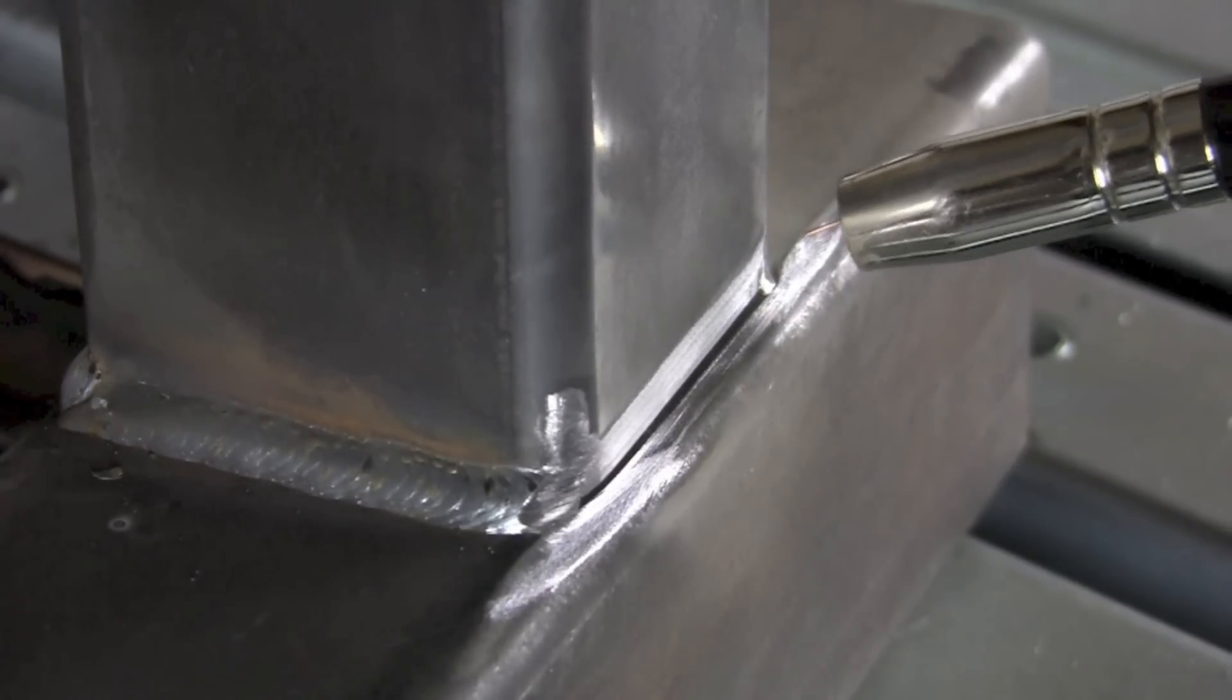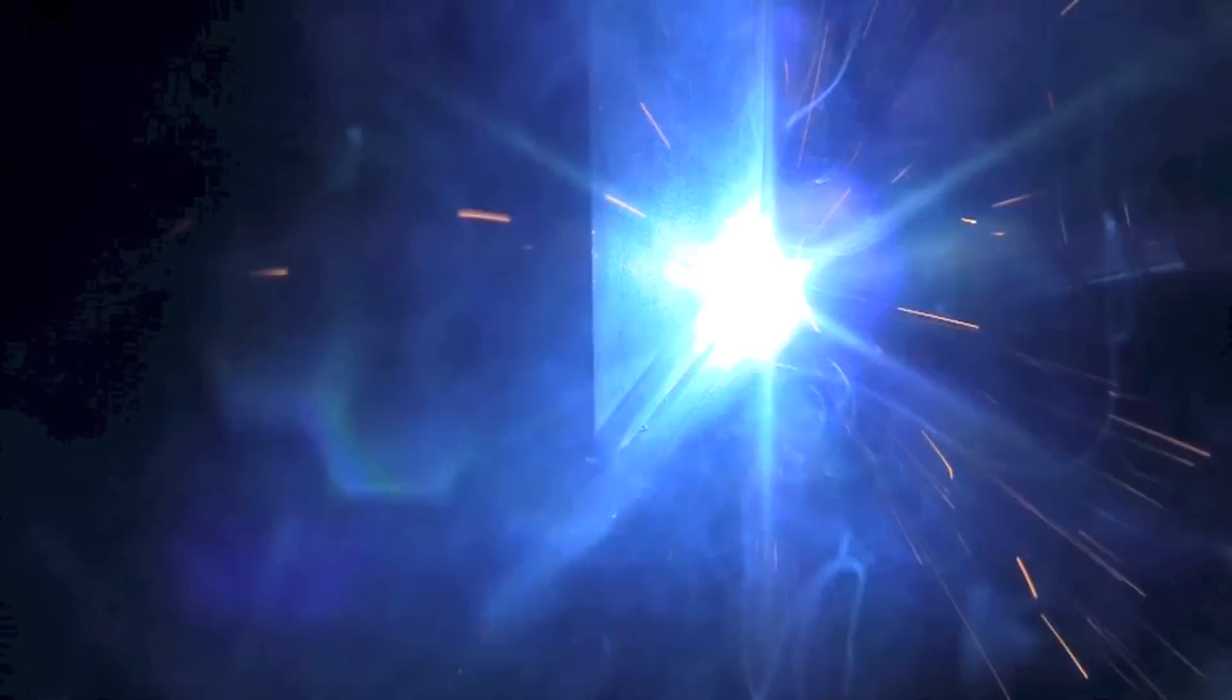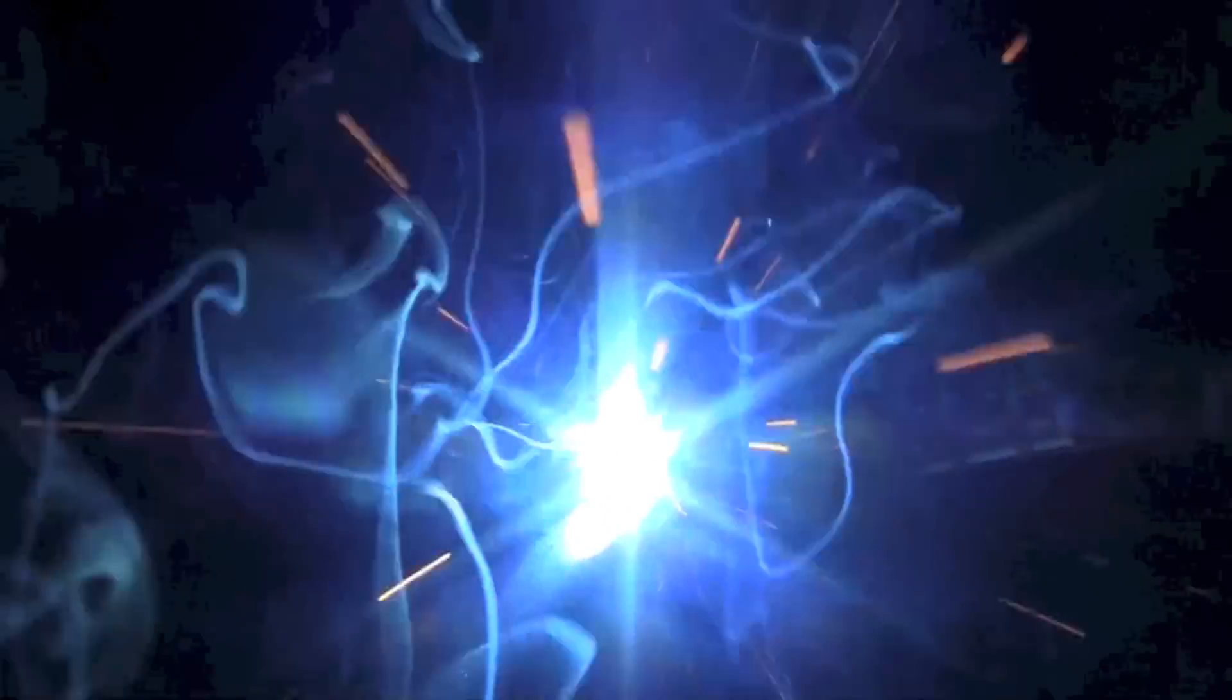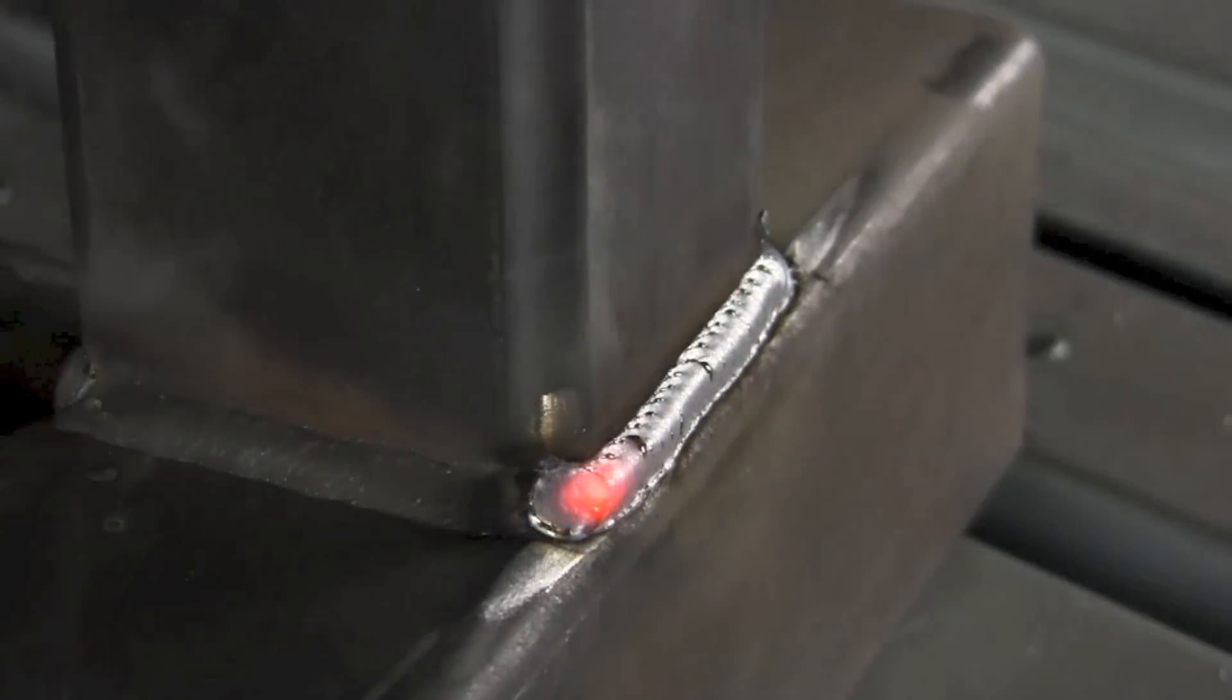Okay, now we're set up and we're going to go ahead and make an attempt at this next side here. Same thing, small circular motion, watching that upper toe to make sure that we don't get any undercut, watching the size of the puddle to make sure it stays full, and kind of wrapping just around the corner and making sure that it ties in well with the next weld.